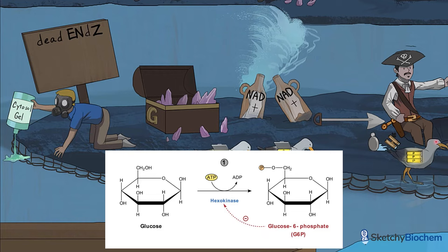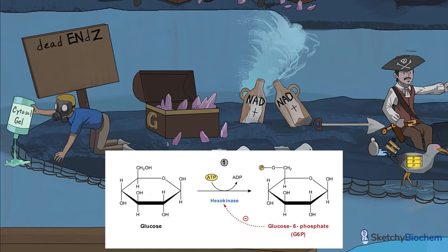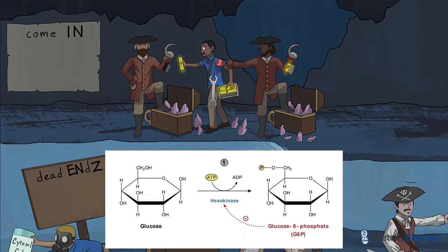G6P is trapped inside cells because the phosphate group makes it negatively charged so it can't cross cell membranes. G6P is an allosteric inhibitor of hexokinase, meaning that it binds to a part of the enzyme that's not the active site. This disrupts the active site and temporarily deactivates the enzyme.